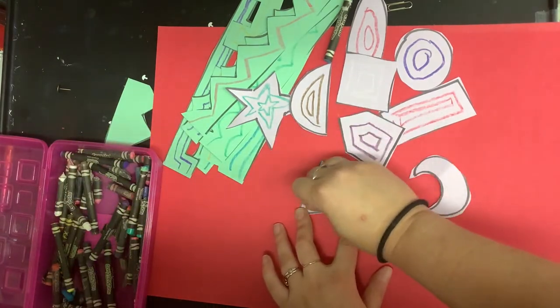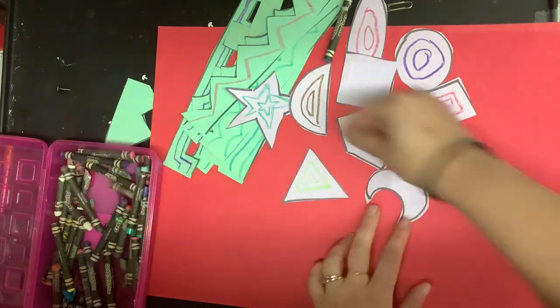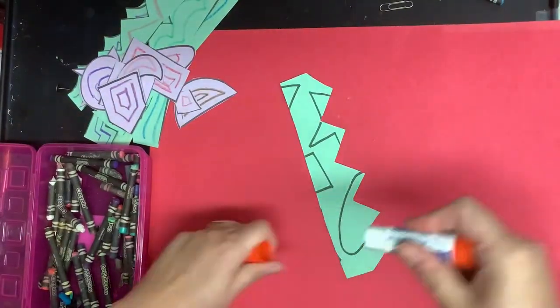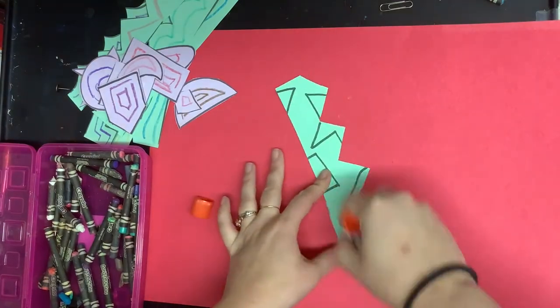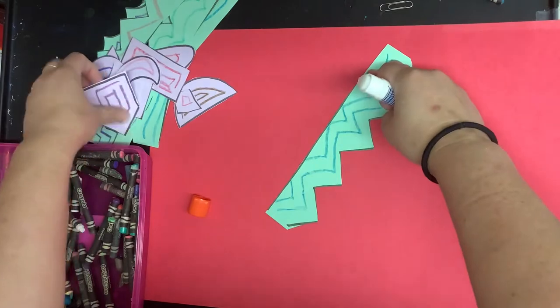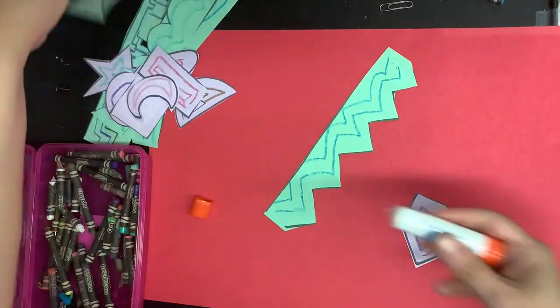And then when I'm finished adding in all of my shapes I'm going to start gluing everything down. So I'm going to get one of my pieces and I'm going to get my glue stick and remember you turn the back to make the glue stick come out and I'm just going to put glue on the back side and then I'm going to glue them down.